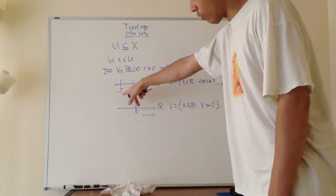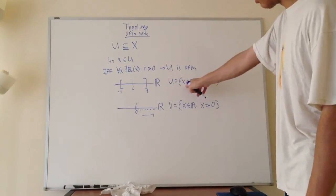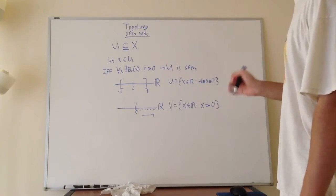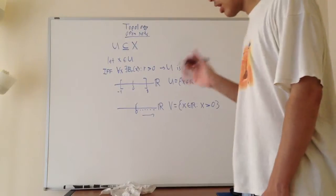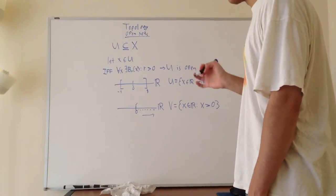Suppose we have the closed interval from negative one to one, and we're going to use the real number line. So our u here is x is a number of the reals such that x is between negative one and one. Is this an open set? Well intuitively you could get that this is a non-open set because it's a closed interval.